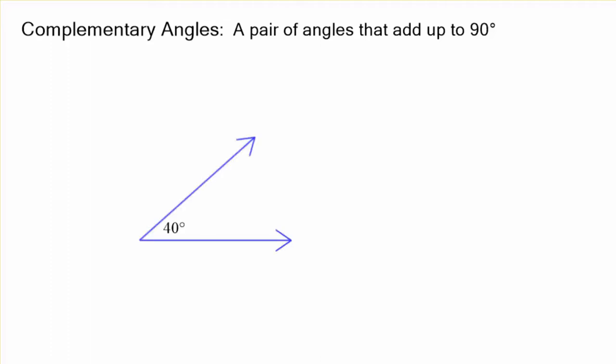For example, if we have 40 degrees, its complement is going to be 50 degrees because they add up to 90. Now, they don't have to be adjacent. They don't have to be touching each other to be complements. As long as the two angles add up to 90, they are complementary.